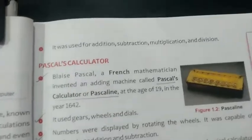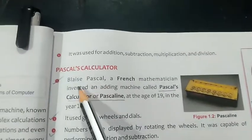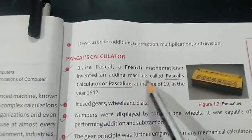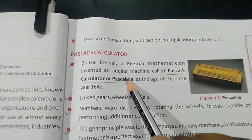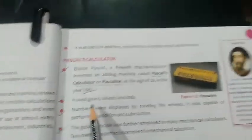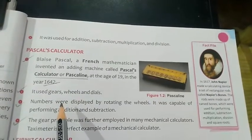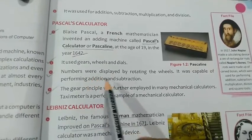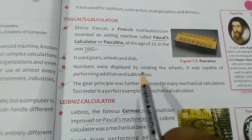Next is Pascal's calculator. Blaise Pascal, a French mathematician, invented an adding machine called Pascal's calculator or Pascaline in the year 1642. These dates are very, very important. It used gears, wheels, and dials. Numbers are displayed by rotating the wheels, capable of performing addition and subtraction.